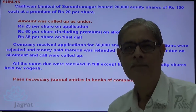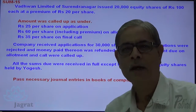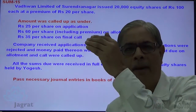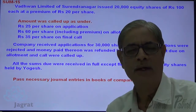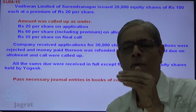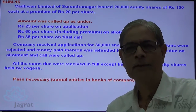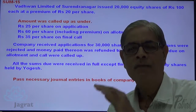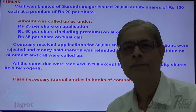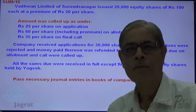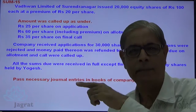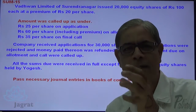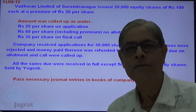If the premium is received with application, the amount is received first, so the entry is: bank account debit to share application account credit. Out of all applications, on whatever number of shares are allotted, the premium received thereon will be credited to security premium account. While writing the second journal entry for the application segment: first entry is bank to share application; second entry is share application account debit to security premium account credit. This is the methodology for writing the security premium.